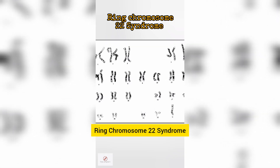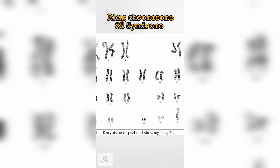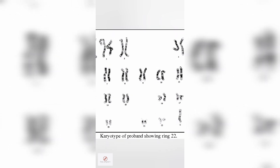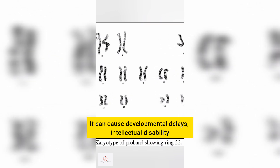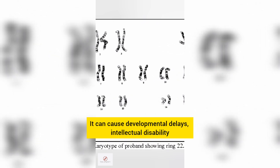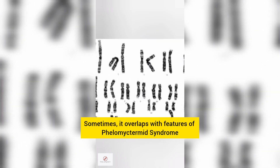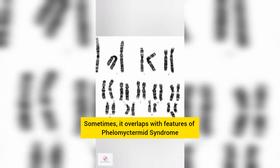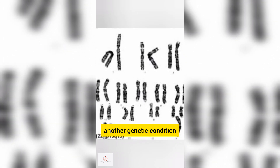Ring chromosome 22 syndrome (R22) can cause developmental delays, intellectual disability, and other symptoms. Sometimes it overlaps with features of Phelan-McDermid syndrome, another genetic condition.